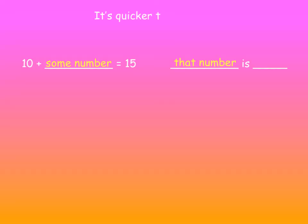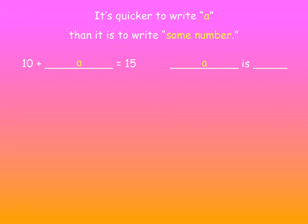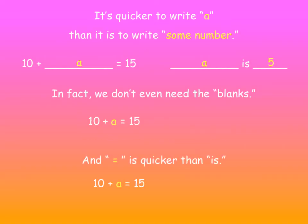It's quicker to write A than it is to write some number. So you just put an A in there. In fact, we don't even need those big answer blanks. You see that blank? Let's just take it away and move the A over. Now that's a little shorter, easier to look at. 10 plus A equals 15. And it's quicker to write an equal sign than the word is. So we'll just say A equals 5.